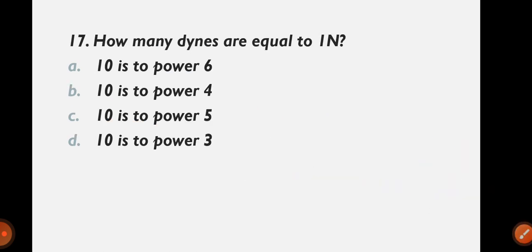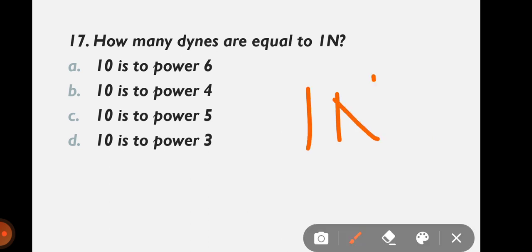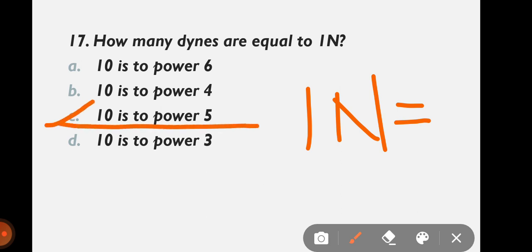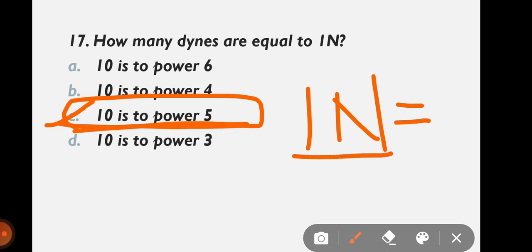Question 17: How many dynes are equal to 1 Newton — 10⁶, 10⁴, 10⁵, or 10³? The correct answer is option C: 10⁵. 1 Newton is equal to 10 to the power 5 dynes.